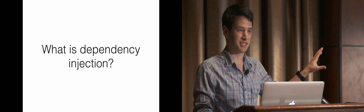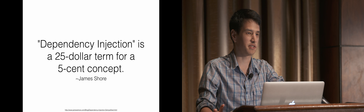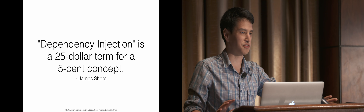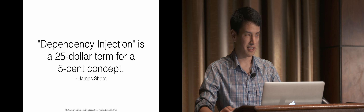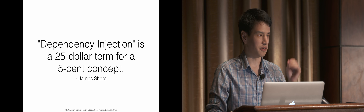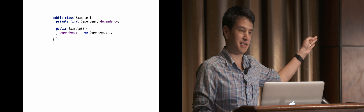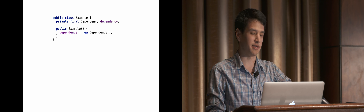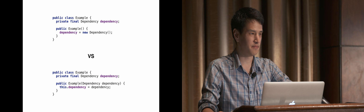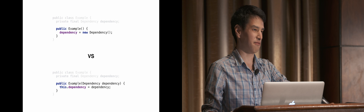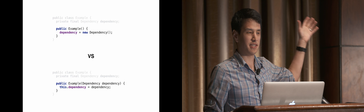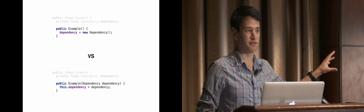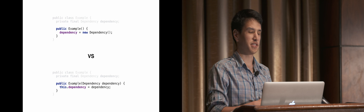Now let's get into what dependency injection is. My favorite quote is from a blog post by James Shore, where he wrote that dependency injection is a $25 term for a five cent concept. Here it is in a nutshell: here's a class that doesn't have dependency injection - inside is a dependency and in the constructor I create an instance of it. Below is dependency injection. The only difference is where the dependency came from: in the top example it was created by the object itself; in the bottom, it was passed into the object.